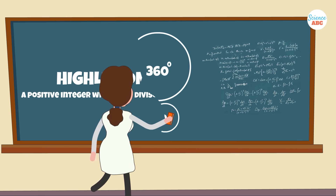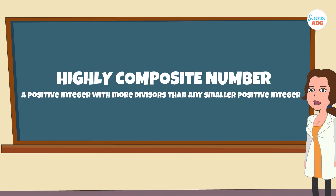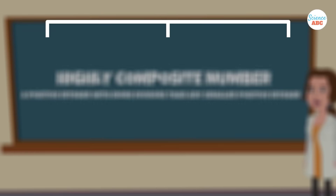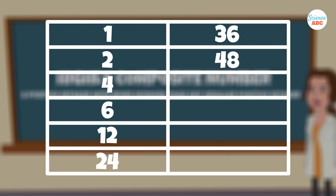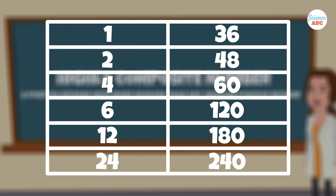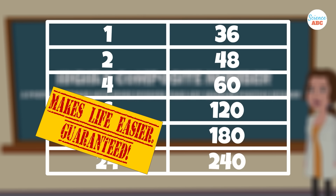Numbers are said to be highly composite if they are positive integers with more divisors than any smaller positive integer has. The only highly composite numbers below 360 are 1, 2, 4, 6, 12, 24, 36, 48, 60, 120, 180, and 240. Highly composite numbers are considered good base numbers with which to perform common calculations.